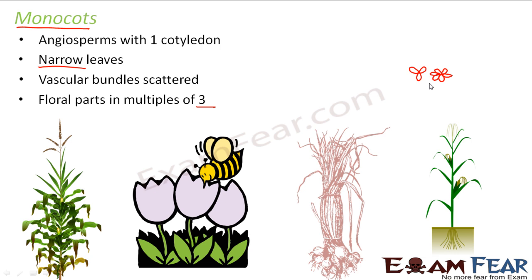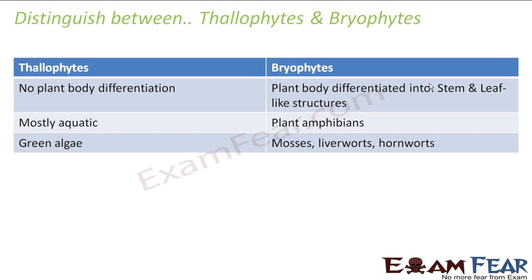With this we have reached almost the end of Kingdom Plantae. This kingdom included too many different varieties of organisms, which is why we needed to sub-classify them further. Let us now quickly review by distinguishing between certain groups. The first distinction is between thallophytes and bryophytes — names that sometimes cause confusion.